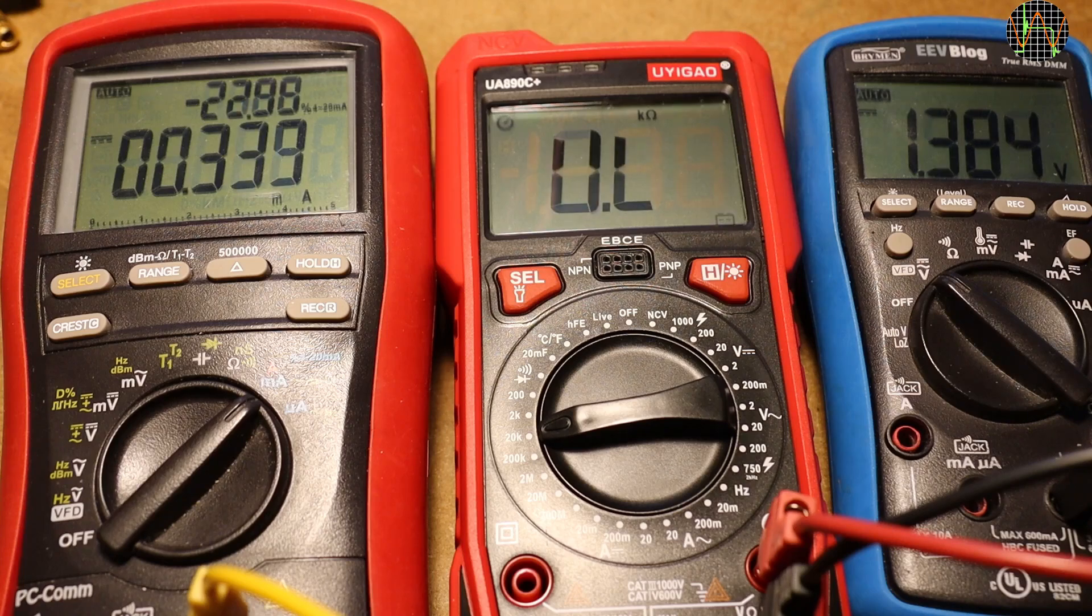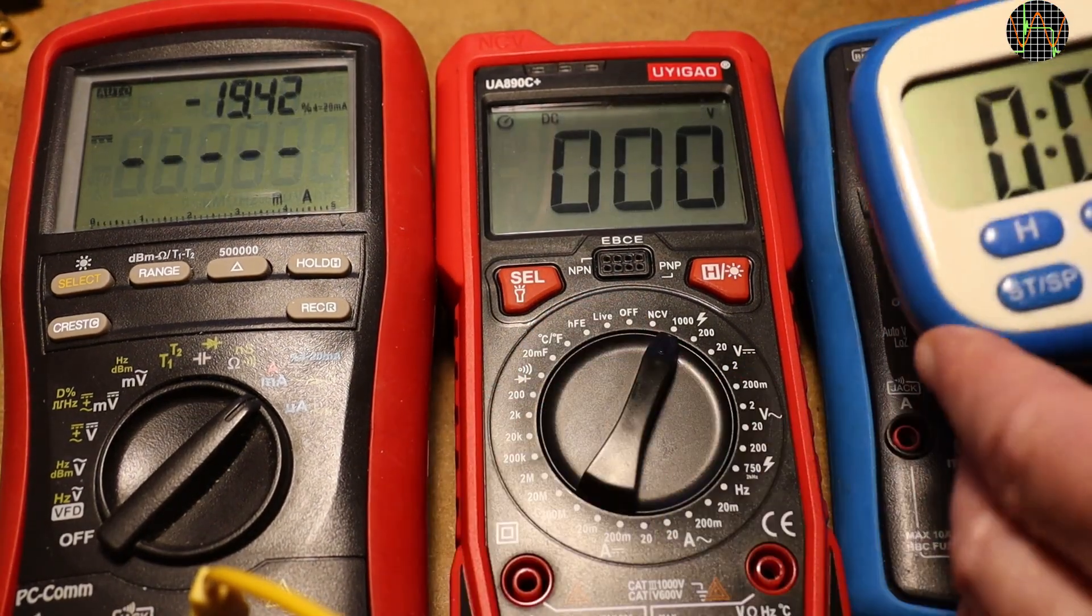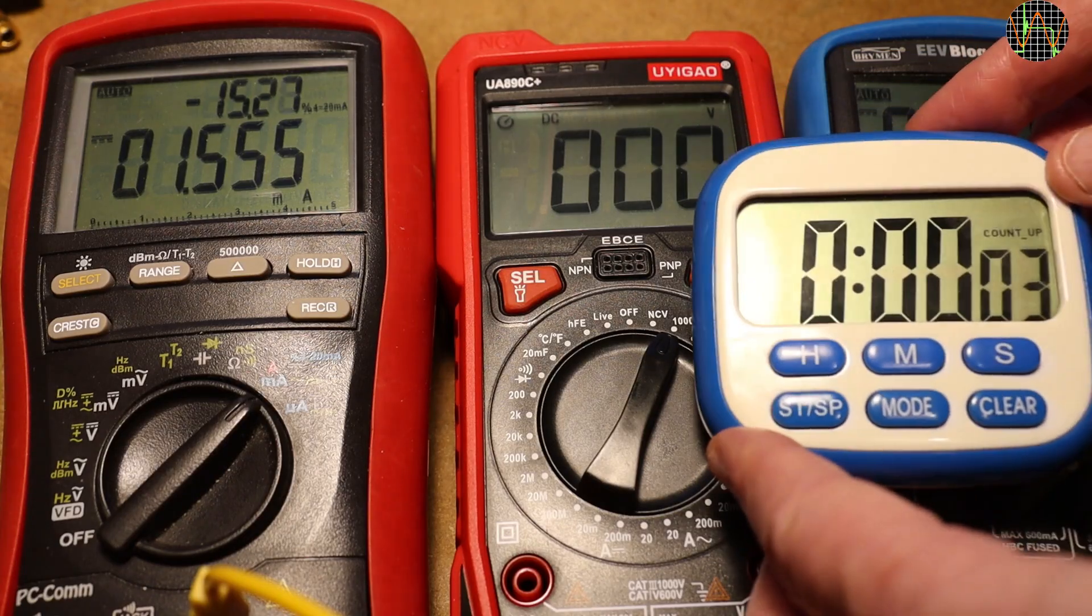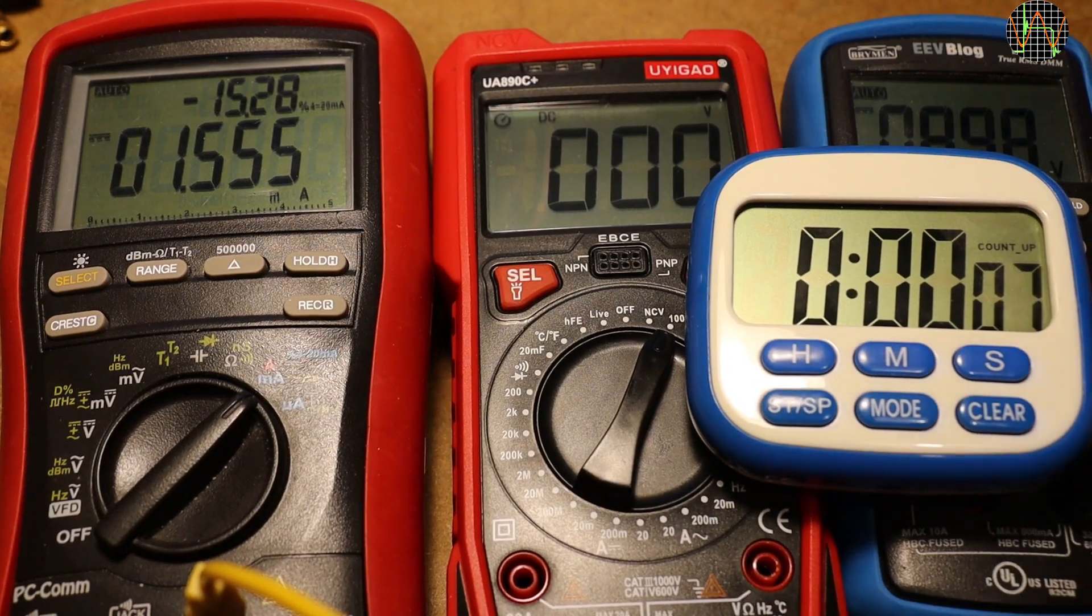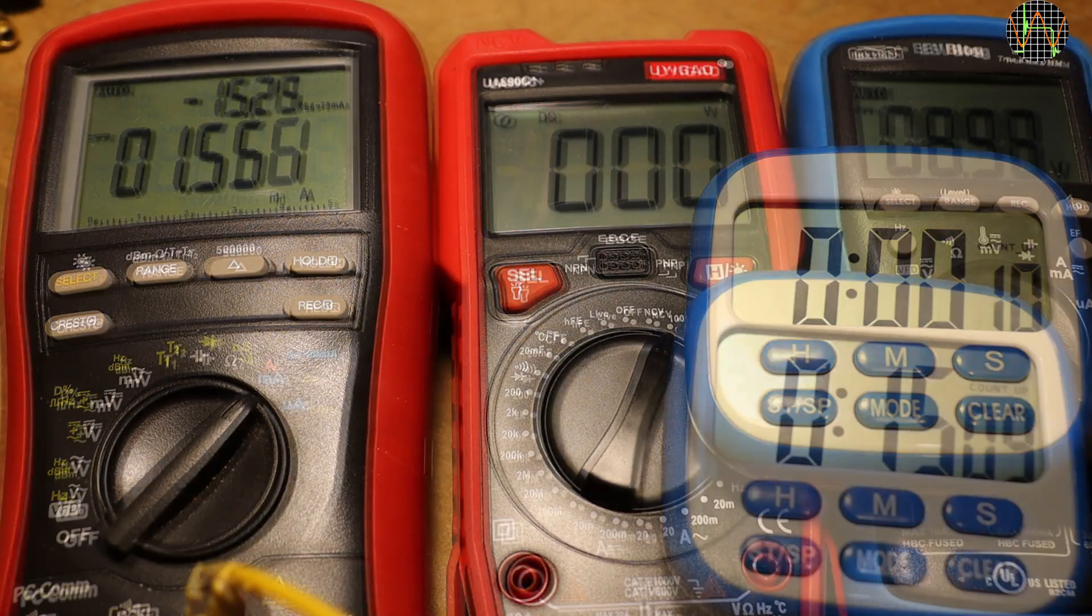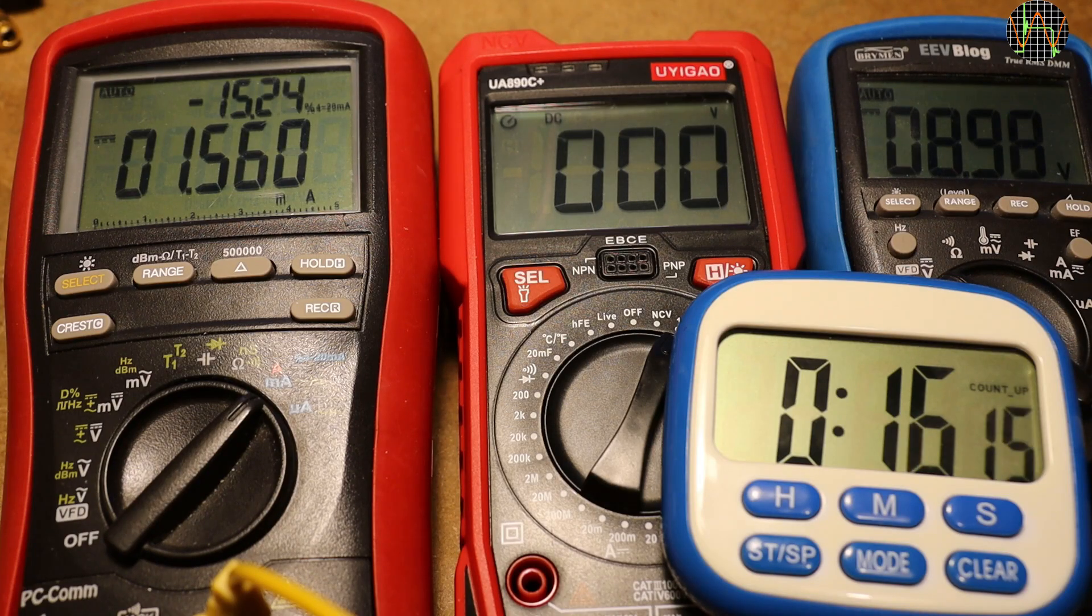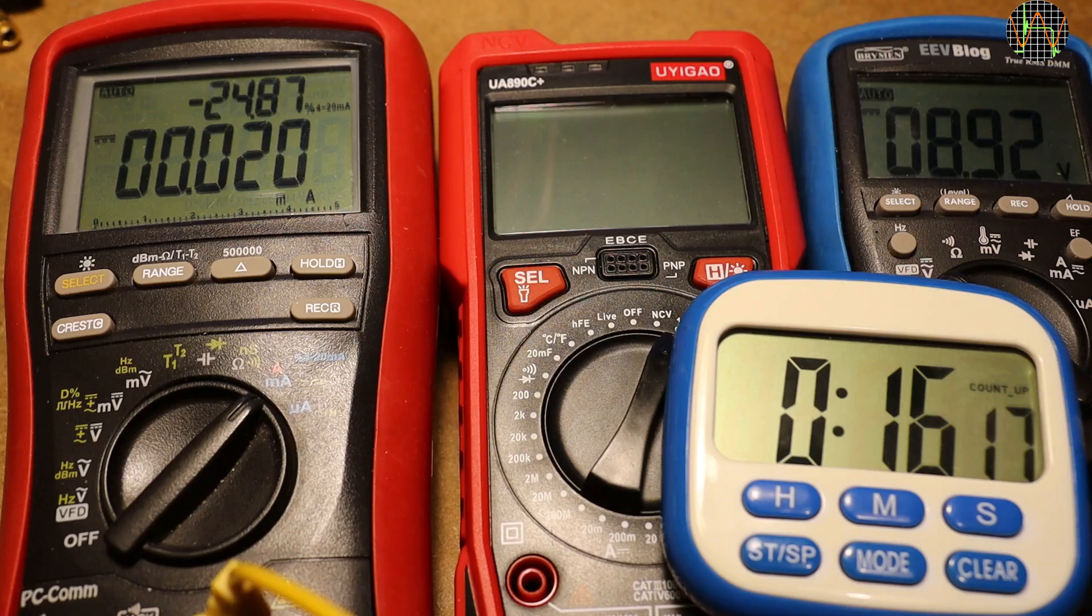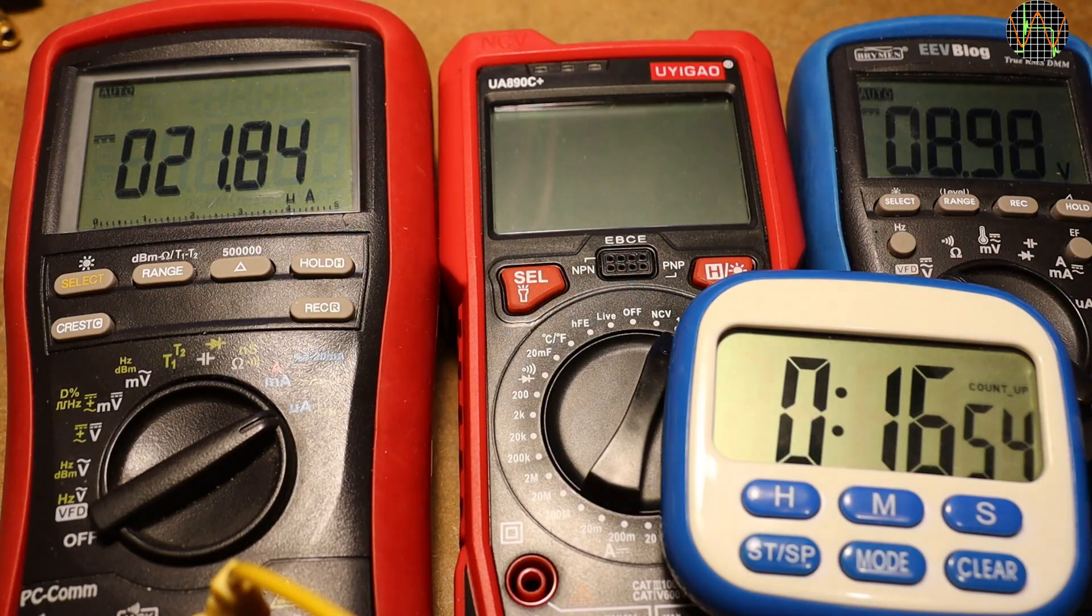This meter has an auto power off, which the manual says is 15 minutes. By the way you can disable APO by holding the select key while powering on. Well, at 15 minutes, 11 seconds or so we get an alert. And roughly 1 minute later the meter shuts down. The current draw in this state is about 22uA which is acceptable but it is still better to turn the meter off manually.